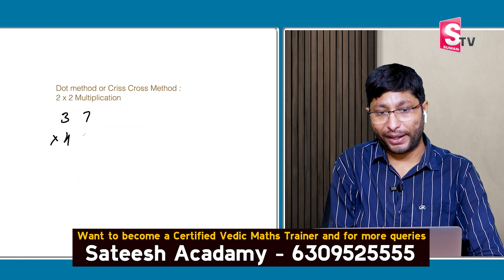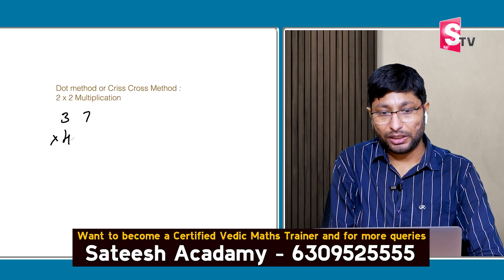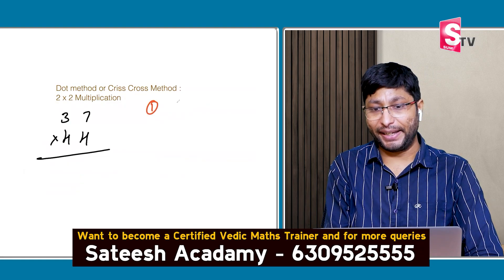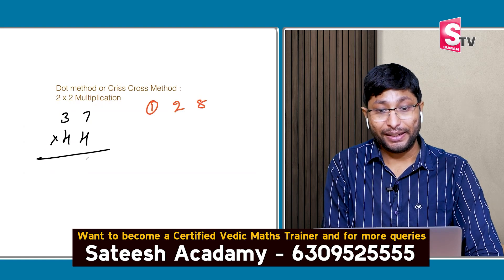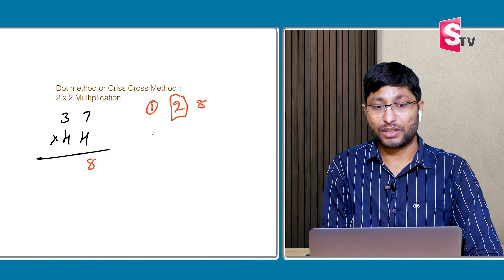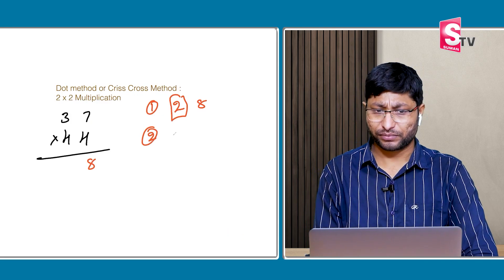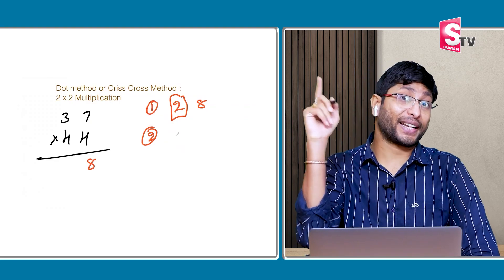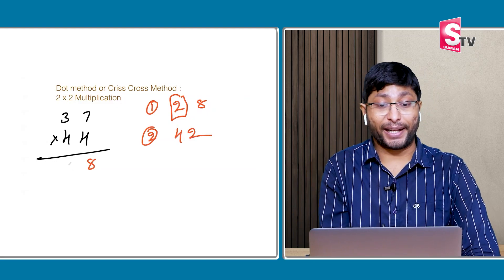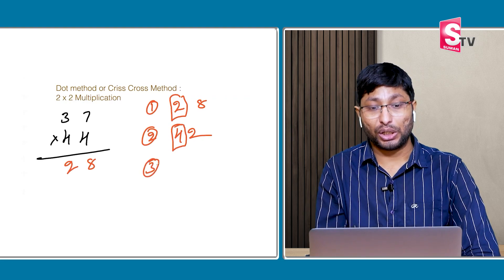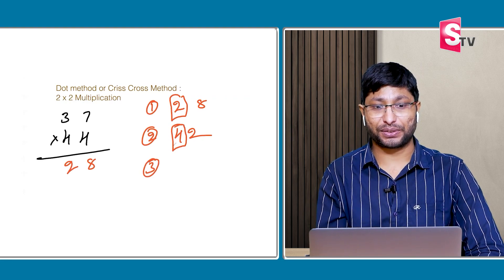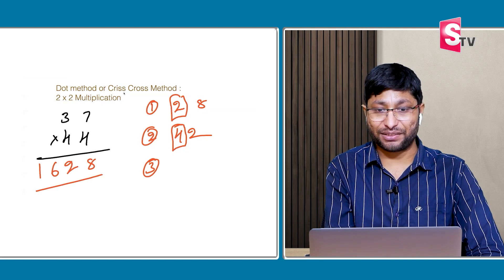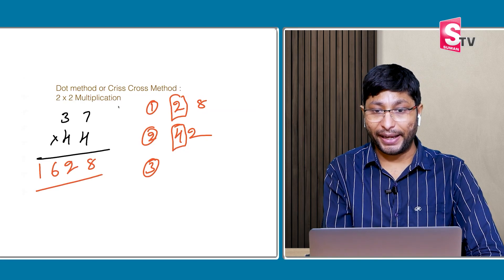Next: 37 × 44 — a little bigger numbers. Step 1: 7 × 4 = 28. Write down 8, and 2 will be carry. Step 2: 4 × 3 = 12, and 7 × 4 = 28. 28 plus 12 = 40. Plus 2 carry = 42. Write down 2, and 4 carry. Step 3: 3 × 4 = 12. Plus 4 = 16. The answer is 1628.